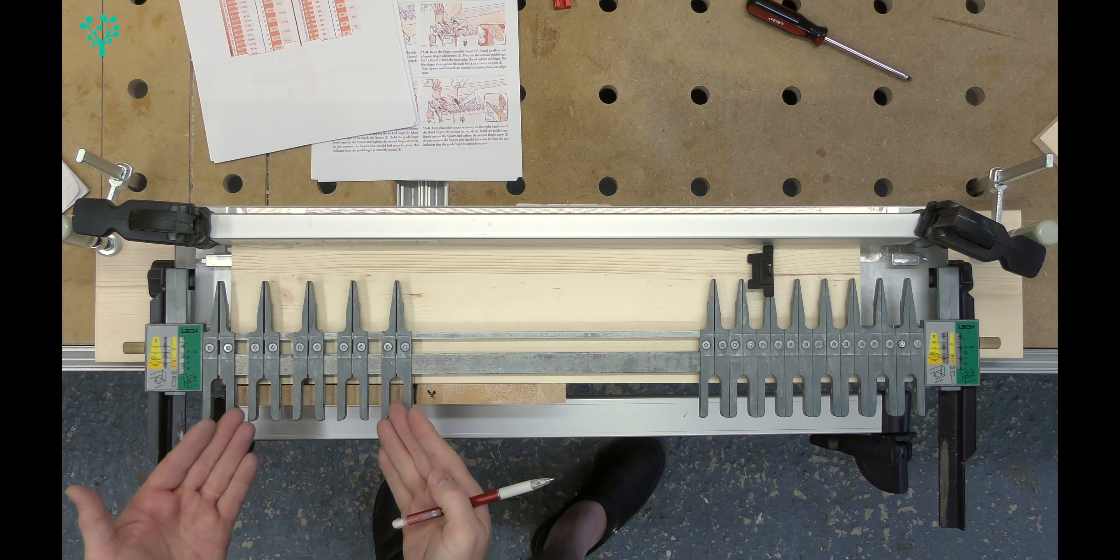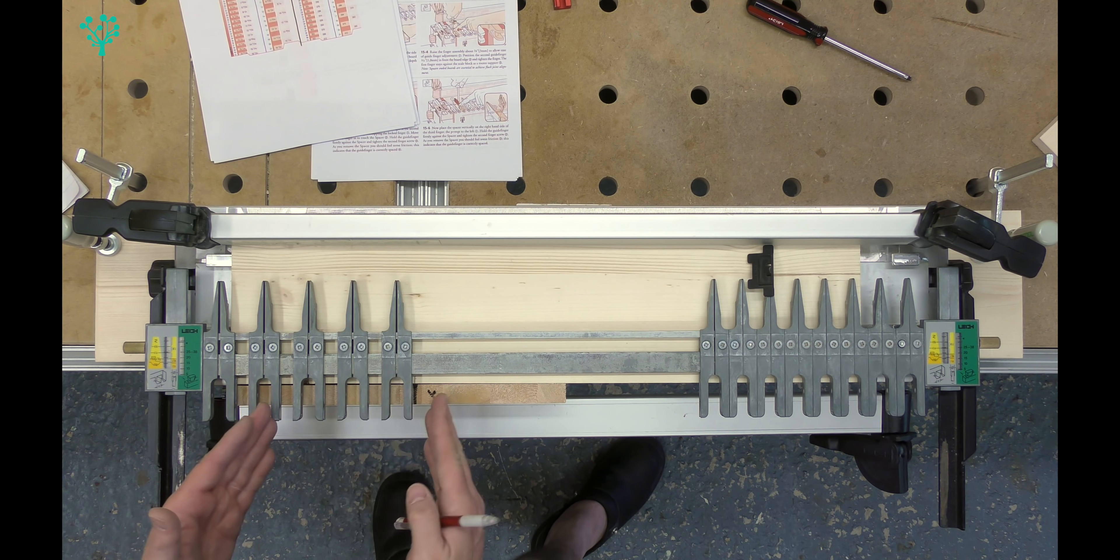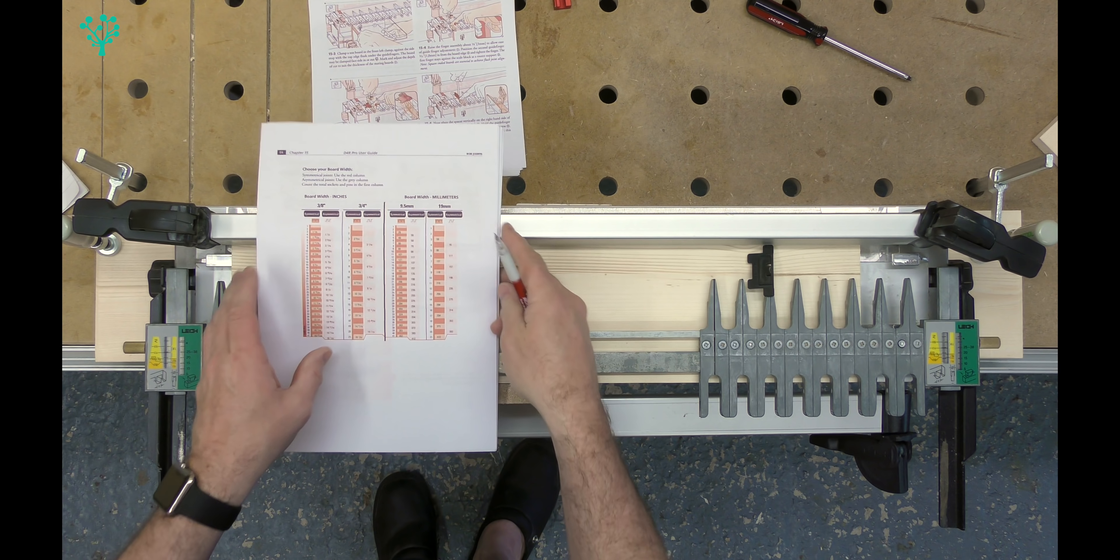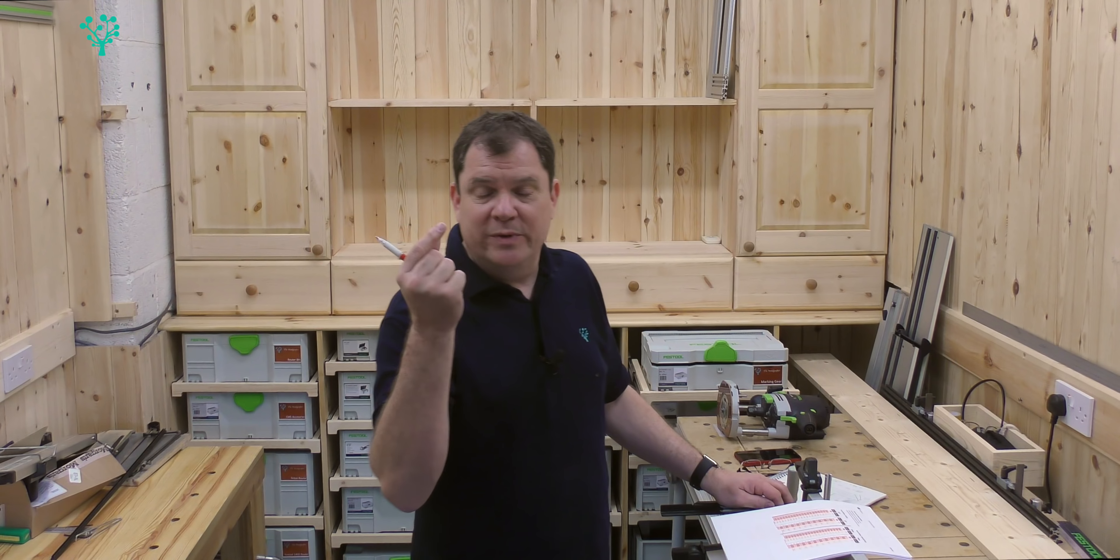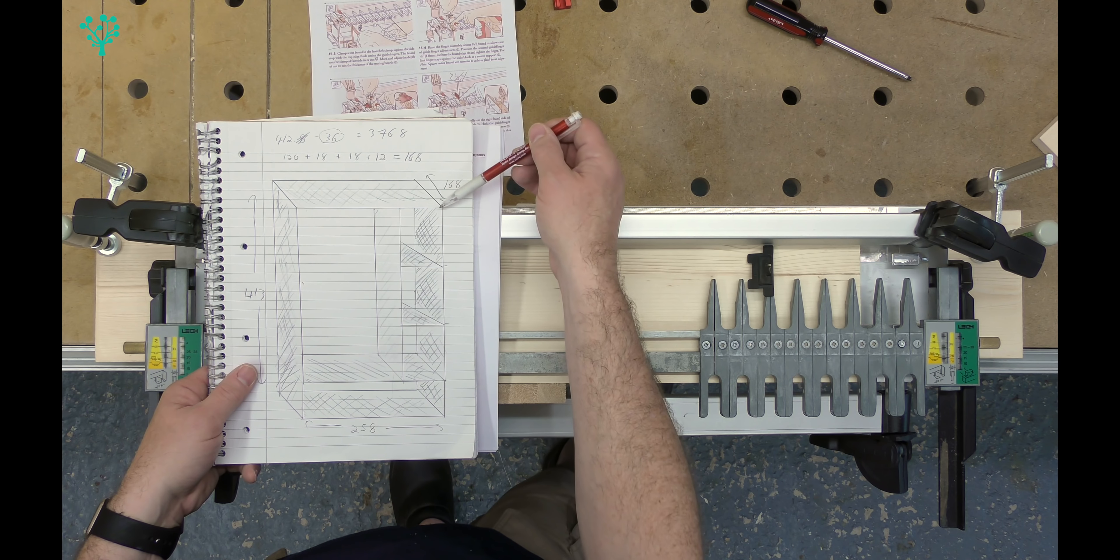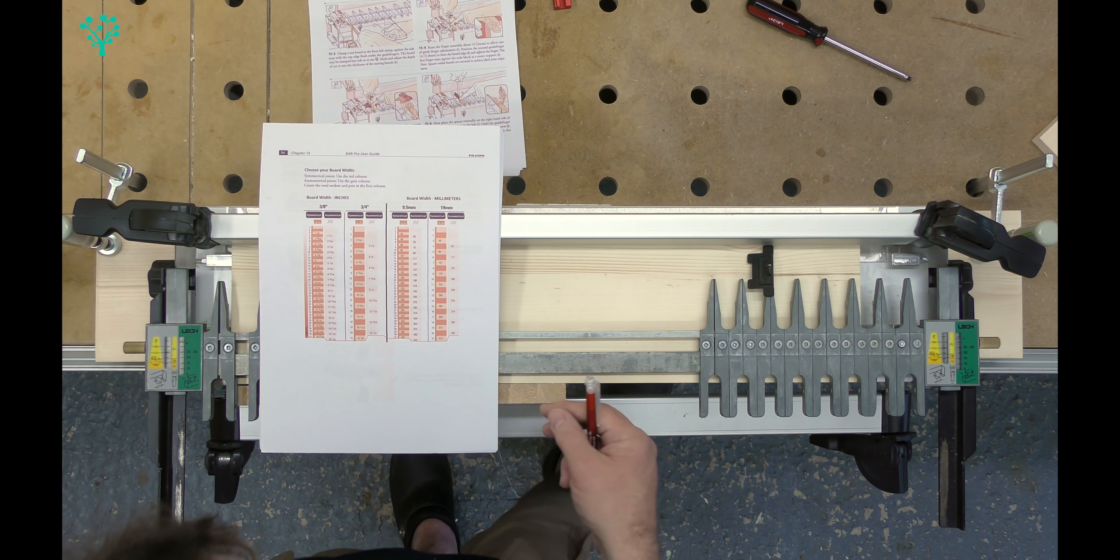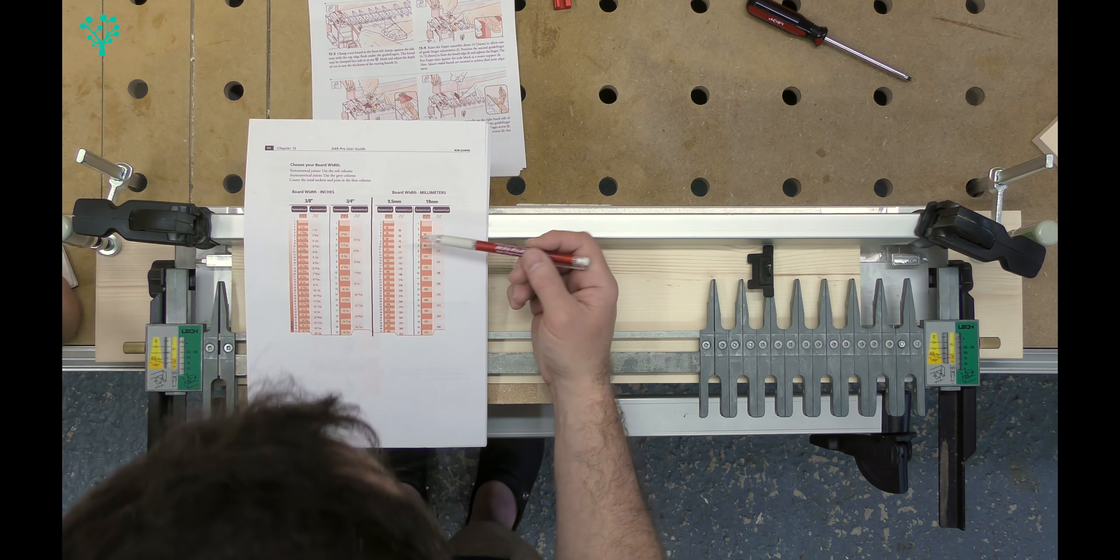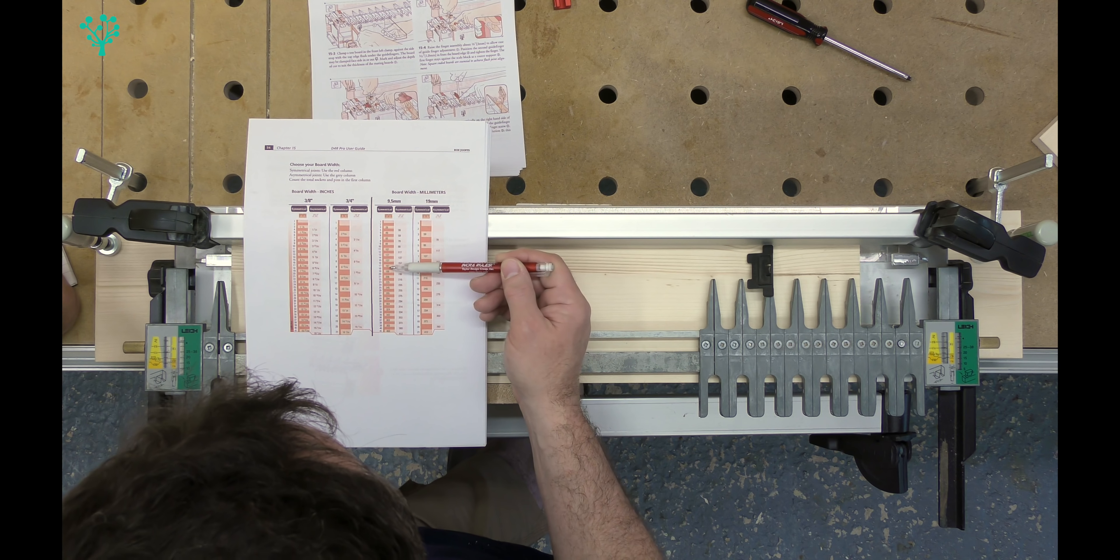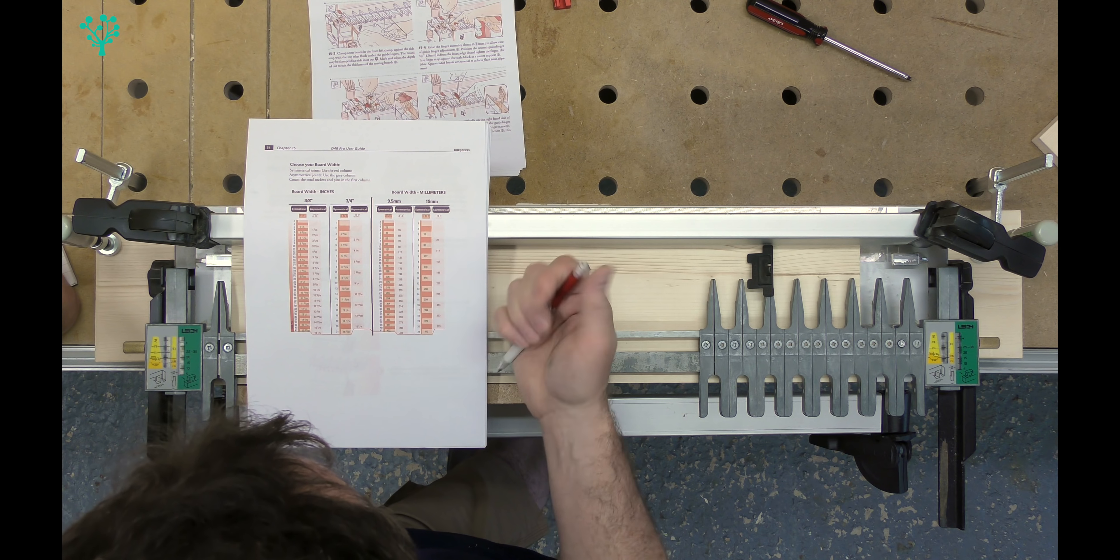Now because that's set at 9.5 millimeters and 19 millimeters, and because of the way this works, everything has got to line up, you have to vary the width of your stock. Which could be considered as a limitation that the jig is now dictating the width of the stock and not our design requirements. In an ideal world, I want 168 millimeters.